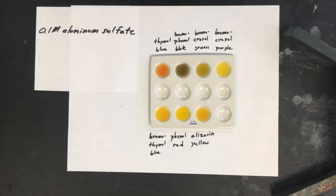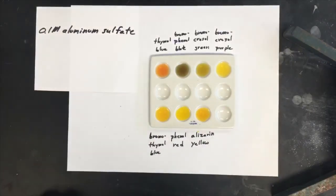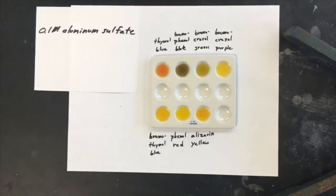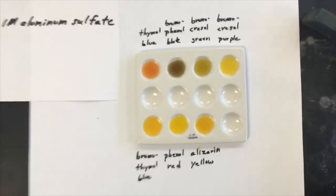Here's the last, or the next to last solution, excuse me. It's 0.1 molar aluminum sulfate. And here everything has been combined and mixed up. And let me zoom in so you can see a little closer what the colors are like.